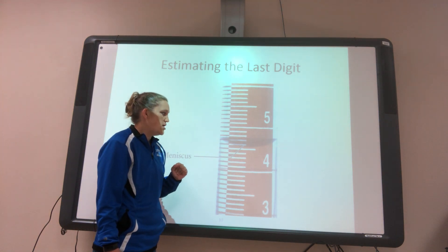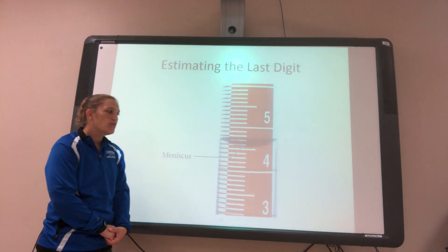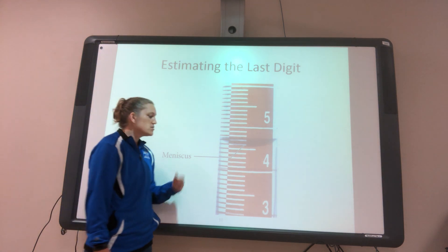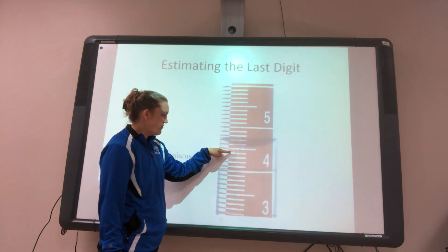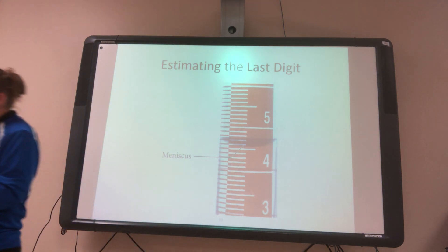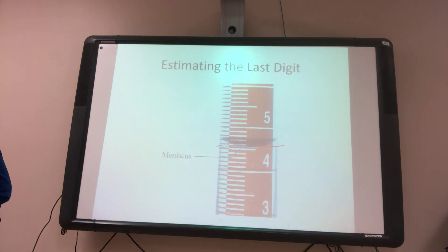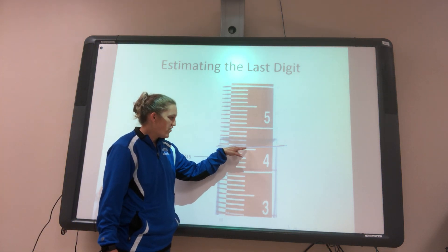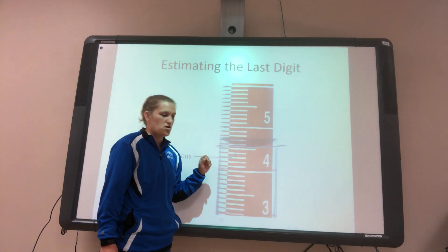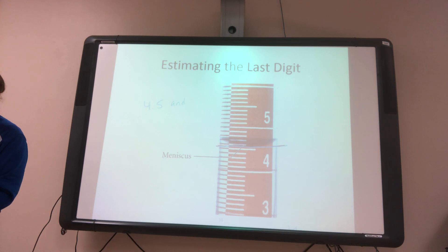We see the four and the five, so it's got to be somewhere in between four and five. Looking at the hash marks — one, two, three, four, five, six, seven, eight, nine — the bottom of our meniscus is between the fifth and sixth hash mark. So our number is between 4.5 and 4.6.